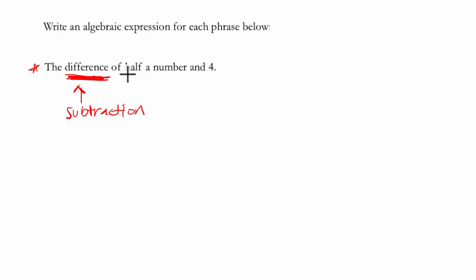What are we subtracting? Well, half a number and four. So those are the two things we're subtracting. And when you say you find the difference of two or three or more things, you can go right in the order they appear.